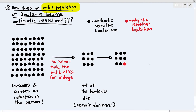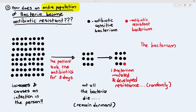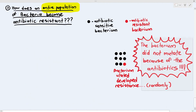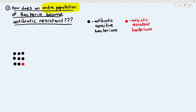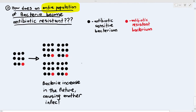During that period of dormancy, one bacterium may have accidentally mutated and — luckily for it — developed resistance. I remind students: the bacterium did not mutate because of the antibiotics; it mutated randomly, and it so happened that it developed resistance. When the bacteria became active again, the population increased in the future, causing another infection.